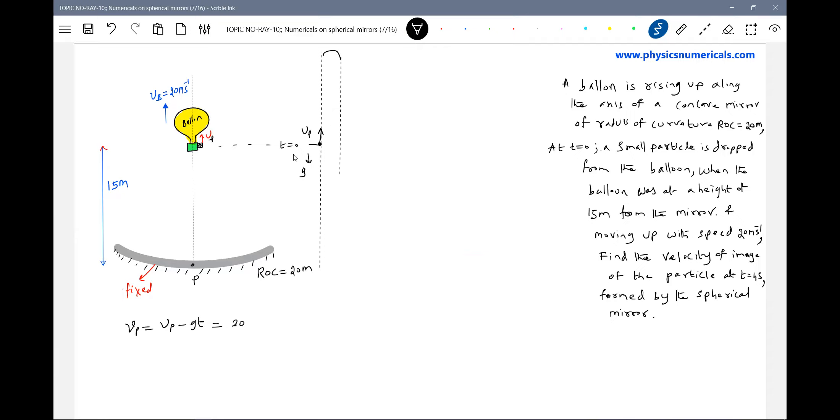So what is the velocity of the balloon due to initial motion? That'll be the velocity of particle. Velocity of your balloon was 20. So velocity of your particle will be 20. U P will initial velocity of particle. It should be called initial velocity of the balloon. That of initial velocity of balloon due to inertia of motion.